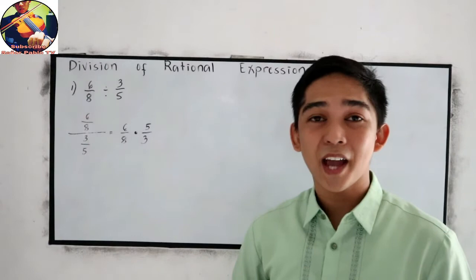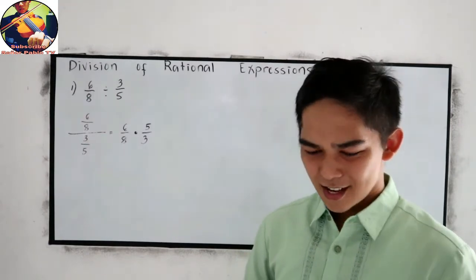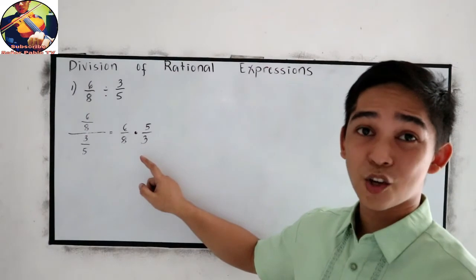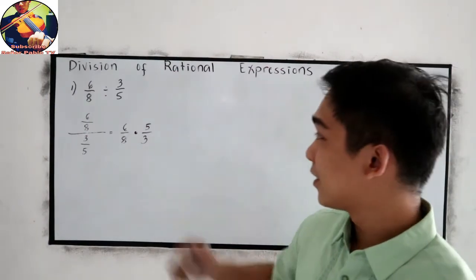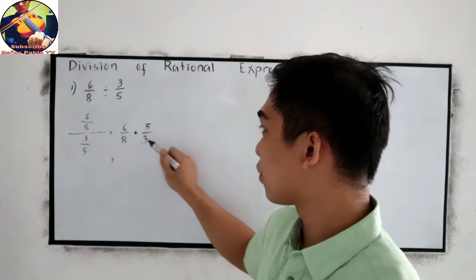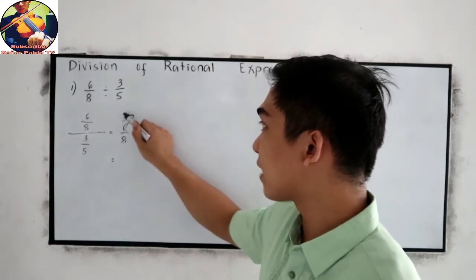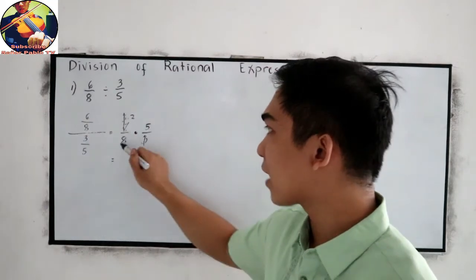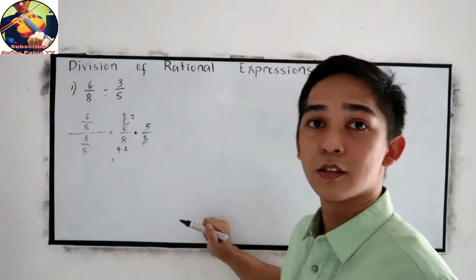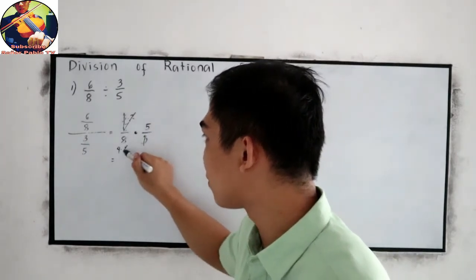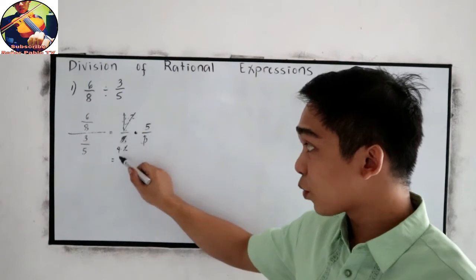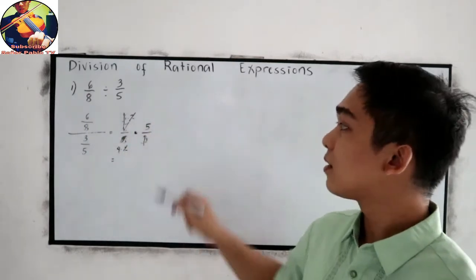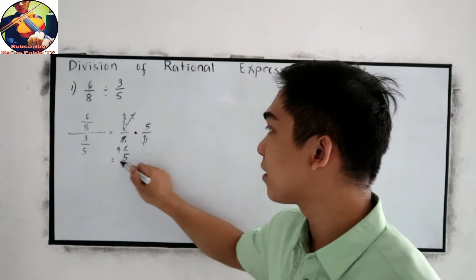Now we're going to apply our multiplication rules. In this case, 6 and 3 have a common factor of 3. So 6 can become 3 times 2, so we can cancel 3 and 3. And 8 has a factor of 4 times 2. 8 is equivalent to 4 times 2. 2 will be canceled out. Now, our final answer is 5 over 4.